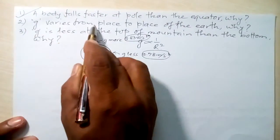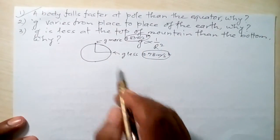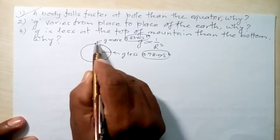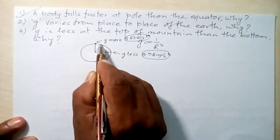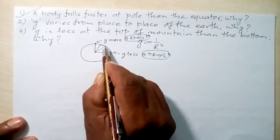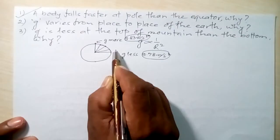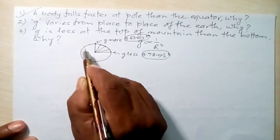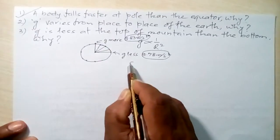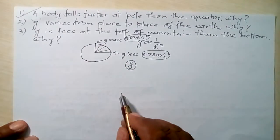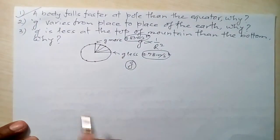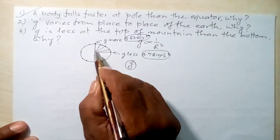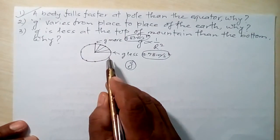Now the second question: g varies from place to place on the Earth — why? At the pole g is about 9.83 m/s², but at intermediate locations it may be around 9.82, 9.81, 9.805, and near the equator around 9.78 or lower. The value of g varies at every place. The reason is that the Earth is flattened at the poles and bulges at the equator, so its radius is different at different places.